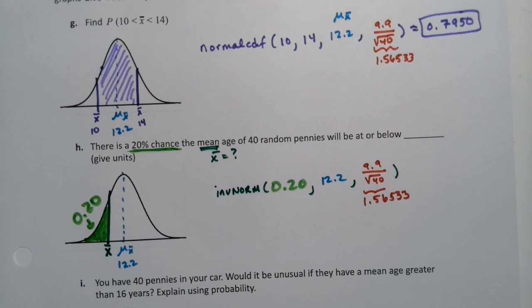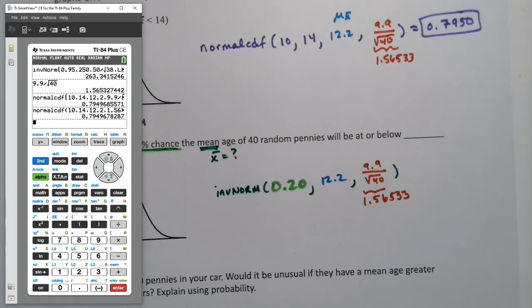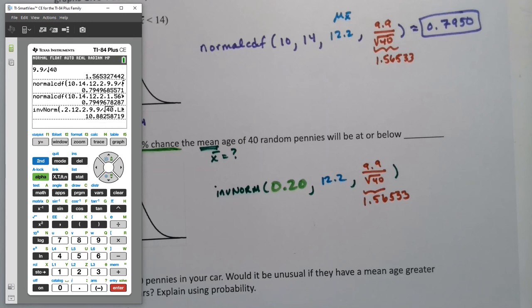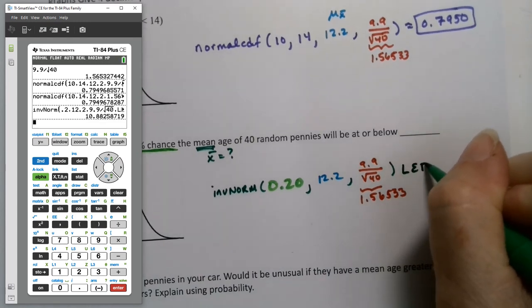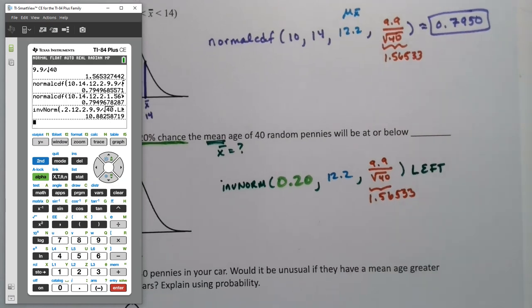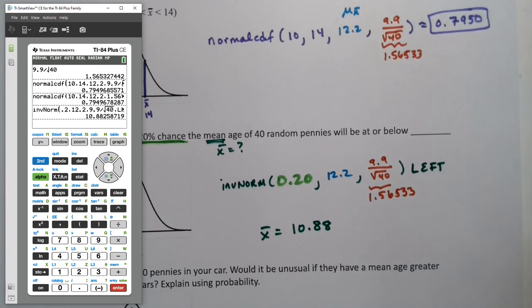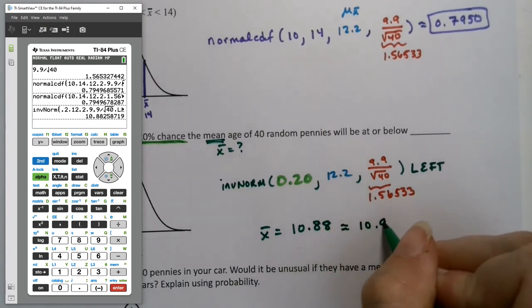I guess I'll go calculator again. Alright, so on the calculator, inverse norm. And then my area is 0.2, 12.2 is my mean, 9.9 divide square root 40, close parentheses. And if you have a new calculator like I have here, you want to choose left. If you have an old calculator, it'll automatically be left, which will make you very happy. Left is your default on the old calculators. Alright, so we get 10.88. So x bar is 10.88 or 10.9. I know they said use one decimal place, so I'll go 10.9.